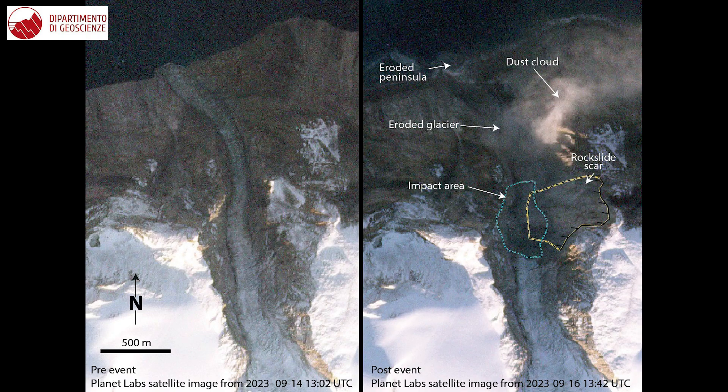This analysis led us to understand that this signal was related to a mass movement — a big piece of rock with 25 million cubic meters detached and entered into a fjord.